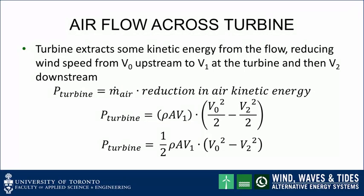Now consider the airflow across the wind turbine at plane 1. The wind turbine extracts some kinetic energy from the flow, reducing the wind speed from v0 upstream to v1 at the wind turbine plane, and then v2 downstream. The power that can be extracted by the wind turbine is equal to the mass flow rate of air times the reduction in the air's kinetic energy. Substituting, the power of the turbine equals the mass flow rate rho A v at the plane of the wind turbine, times the change in kinetic energy from upstream to downstream.